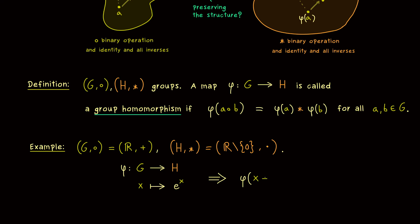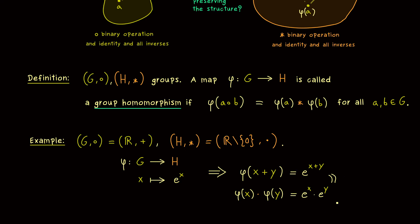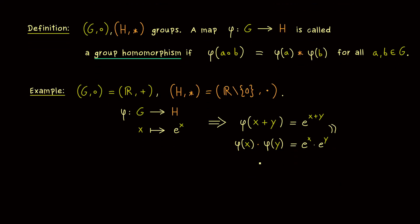And there we can simply check if the group homomorphism property is satisfied. We take two elements x and y and combine them with the binary operation in G, which simply means that we add the numbers. Then the outcome with phi is simply e to the power x plus y. This is the left hand side, and we can also look at the right hand side and compare it. The right hand side means we use the binary operation in H — the multiplication — so we have e to the power x times e to the power y. Now we recognize that the left hand side and the right hand side are actually the same by the basic exponent rule. This is the fundamental property of the exponential function, and we now get a different formulation: it is simply given by a group homomorphism — more precisely, the translation from addition into multiplication.